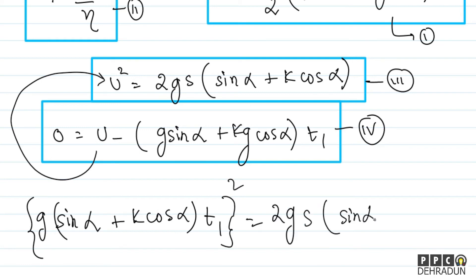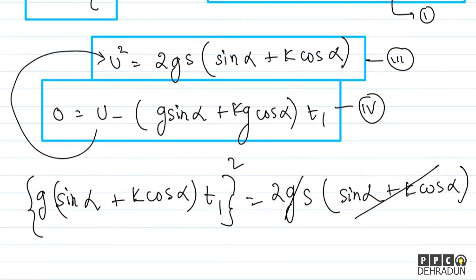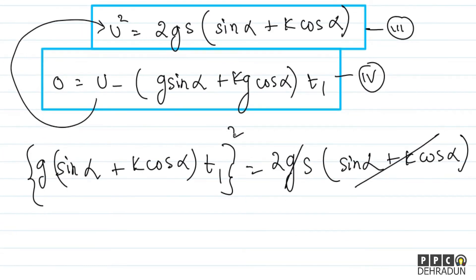On both sides there is a factor of g and (sin alpha + k cos alpha). Cancelling one g and one factor of (sin alpha + k cos alpha), and removing the square root, we get: g(sin alpha + k cos alpha)·t1² = 2s.